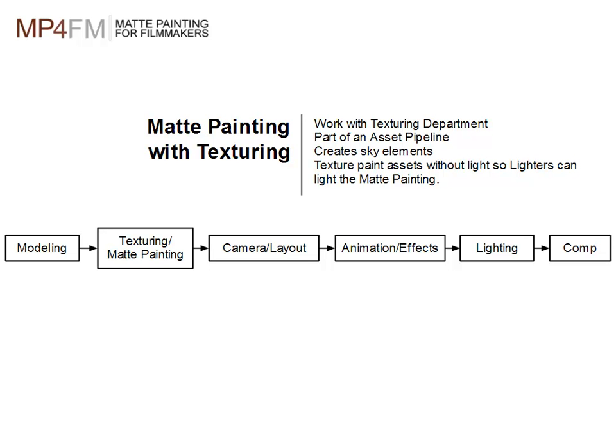Matte painting with texturing is where matte painting is grouped with texturing, and instead of creating elements for comp, they are creating assets for CG. Matte painters will typically create sky domes and paint things without light so that these assets can go through the CG pipeline and show up in the lighters' file to be lit. Matte painters are not texture artists; however, that is one area of their skill set. By their very nature, matte painters are content creators and content finishers — able to create imagery and also integrate it into a shot.